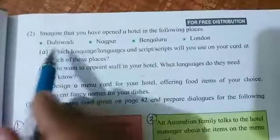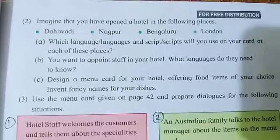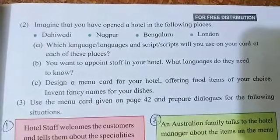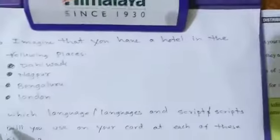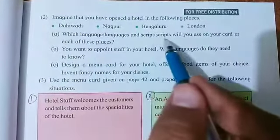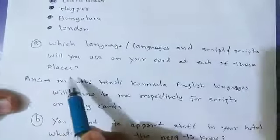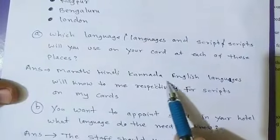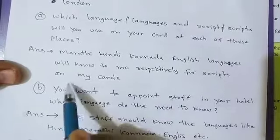Activity five, second question: imagine that you have opened a hotel in the following places — Dhivari, Nagpur, Bengaluru, and Ratnagiri. Question a: which languages and scripts will you use on your menu card at each of these places? Answer: Marathi, Hindi, Kannada, and English languages and their respective scripts will be on my card.